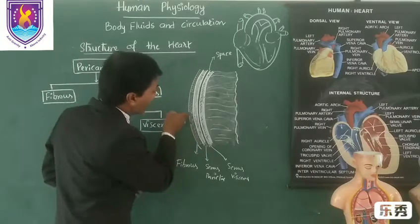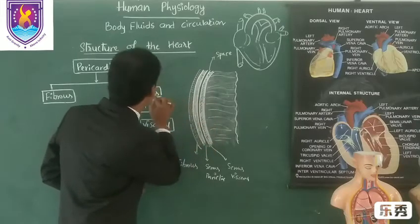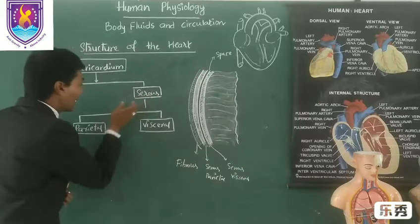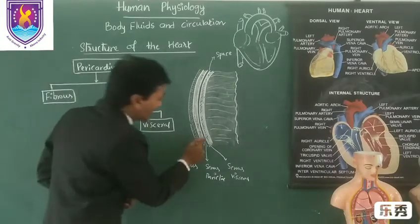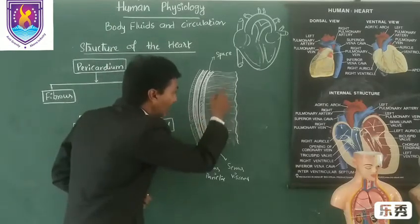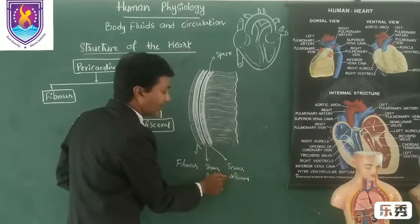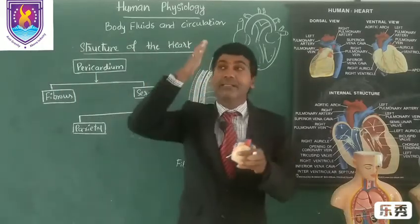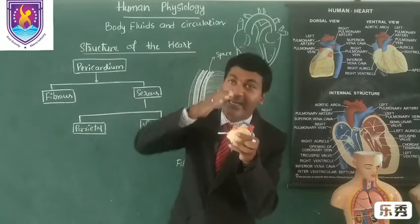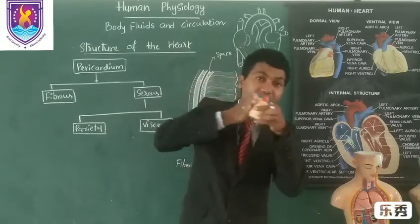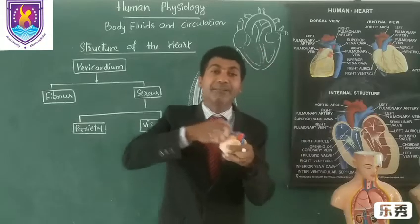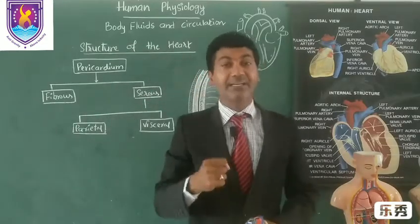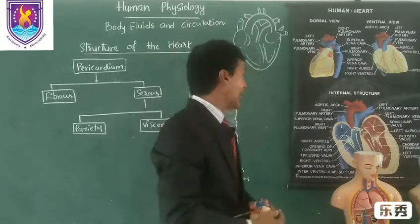Looking at the diagram: the fibrous pericardium is the outermost layer. The part of serous pericardium which is attached to the fibrous pericardium is known as parietal. The part of serous pericardium which is attached to the surface of the heart is known as visceral pericardium. These two layers are separated by a space known as the pericardial space, which is filled with pericardial fluid that protects the heart from external pressure and force.